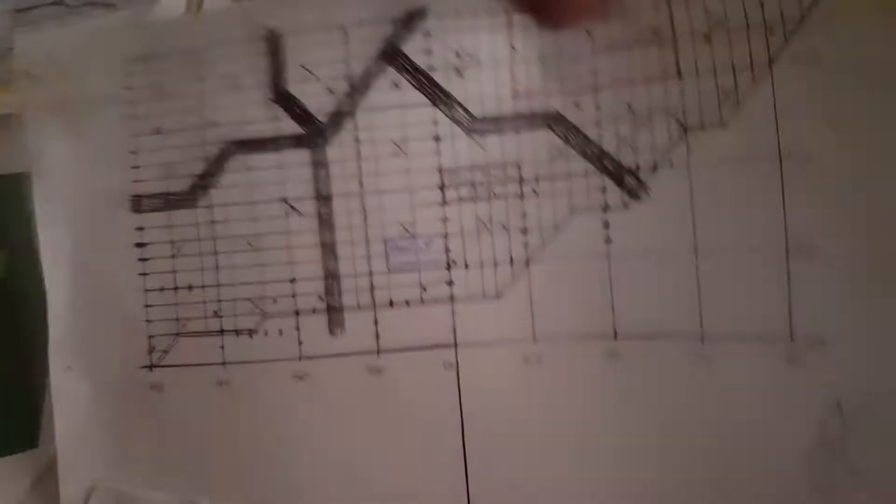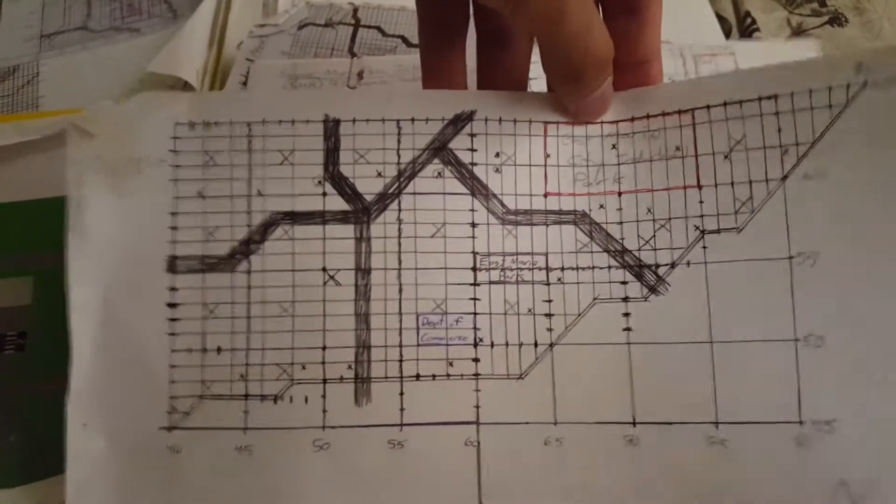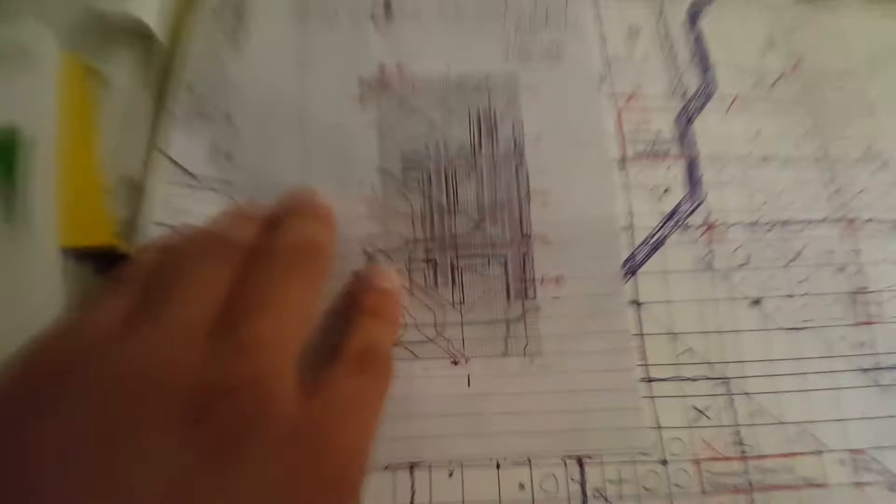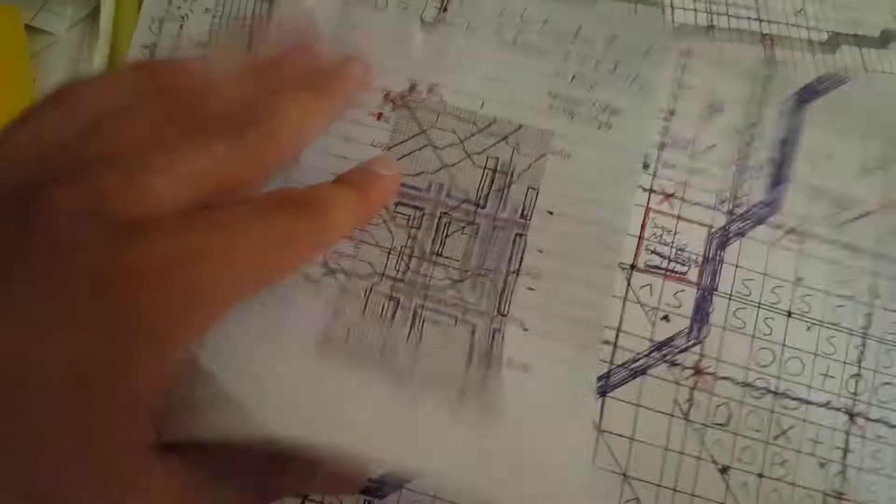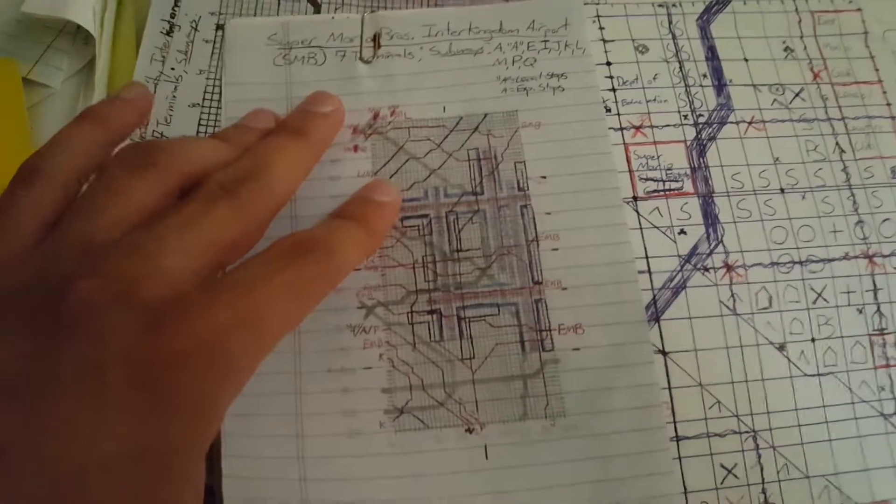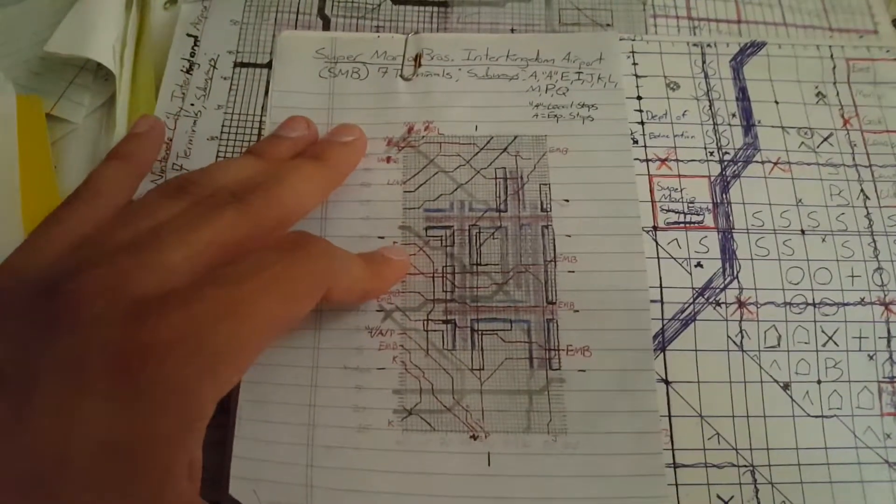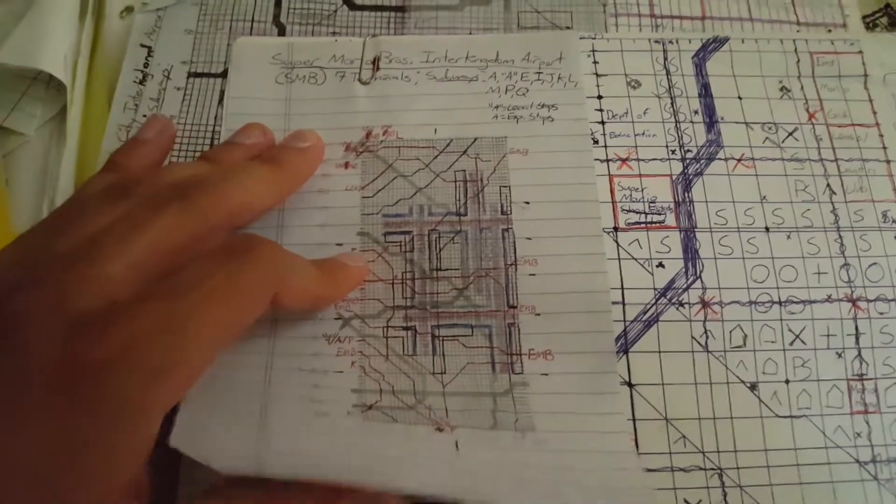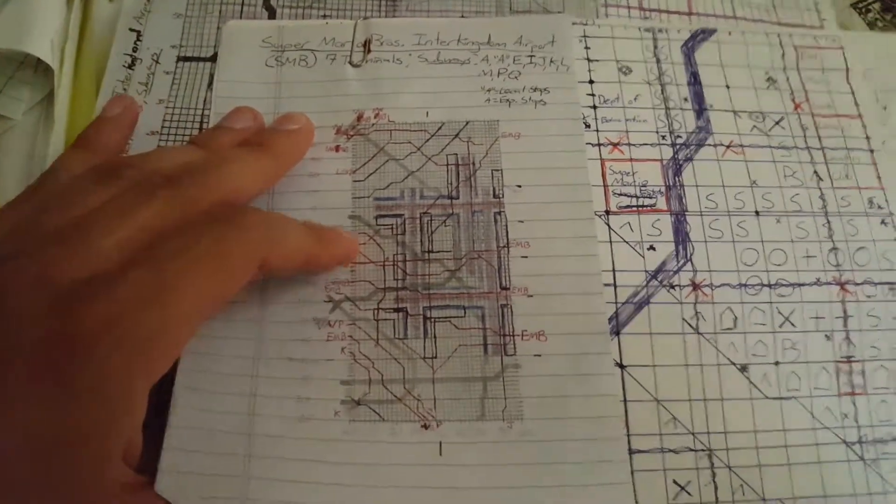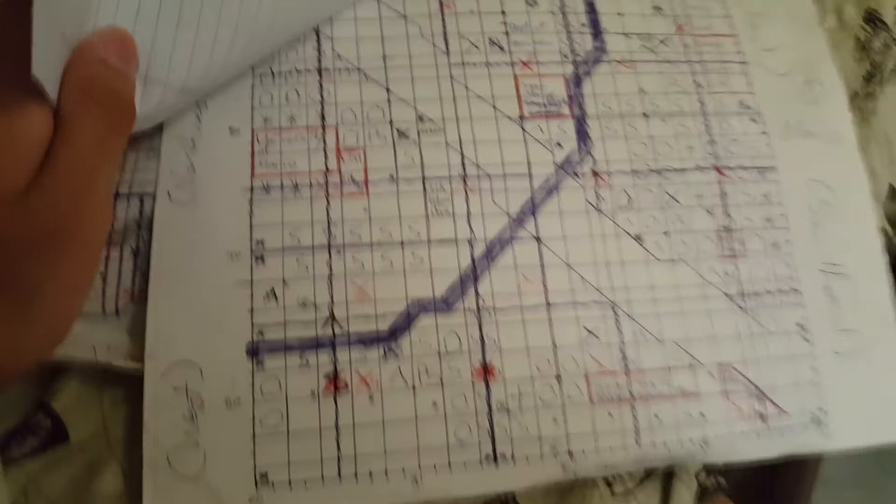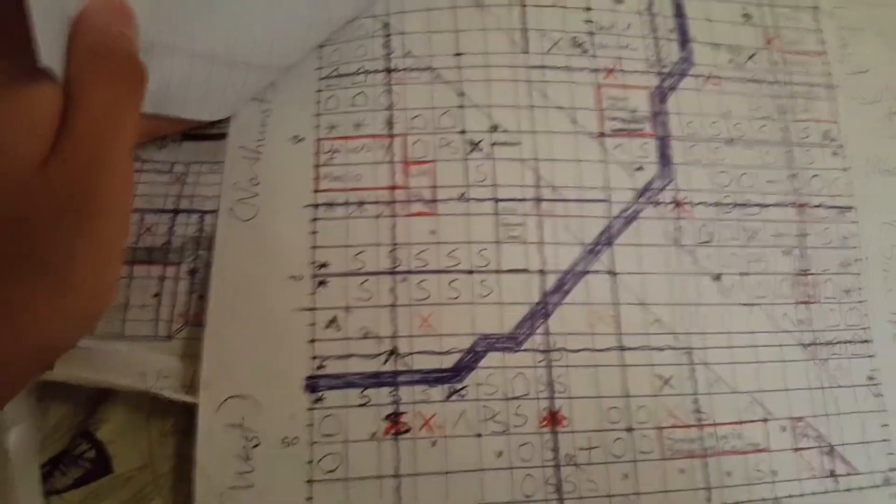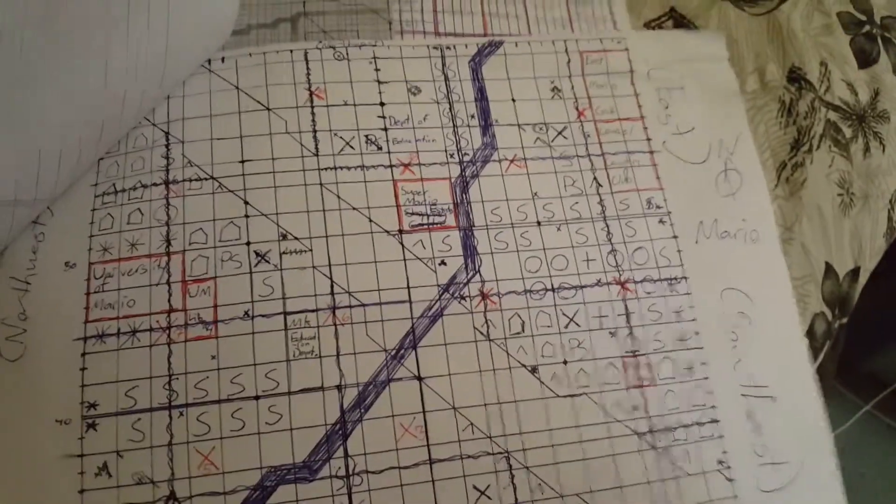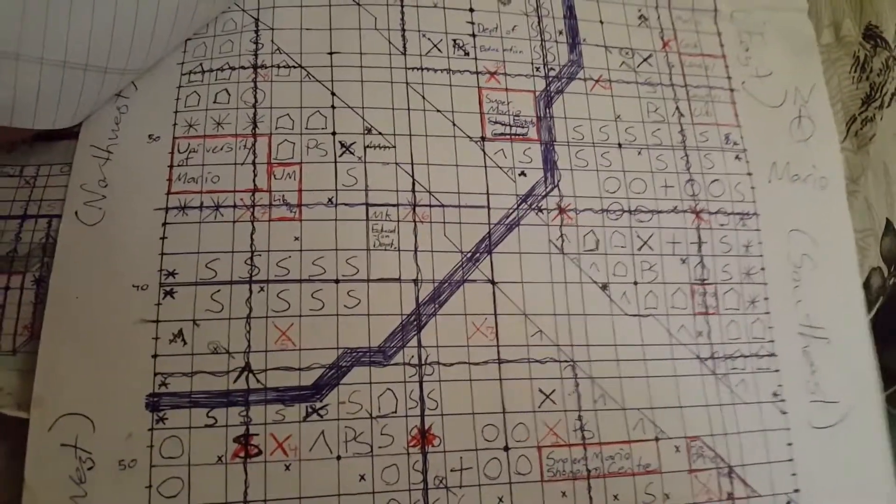This right here is Mario's - actually it's West and East Mario City. This one here is a map of Super Mario Brothers Freeway. No, actually this is the map of the Super Mario Brothers Inter Kingdom Airport. I don't know why I called the Nintendo Airport International, but it's actually Inter Kingdom. Then you have the Mario Towns, you know, West Mario, Northwest Mario, Southwest Mario, Southeast Mario, East Mario, and so on.